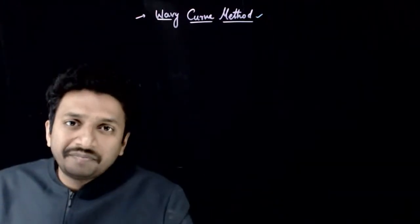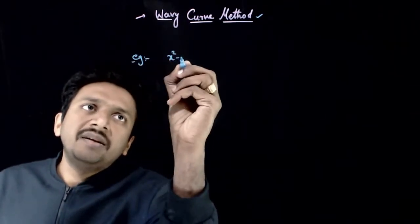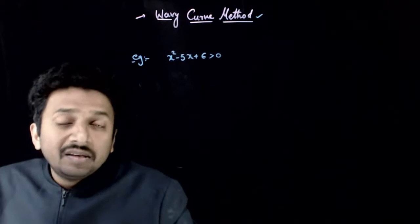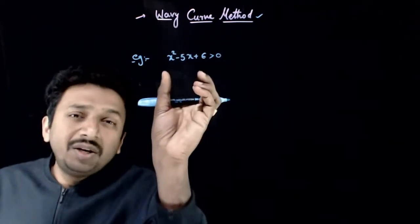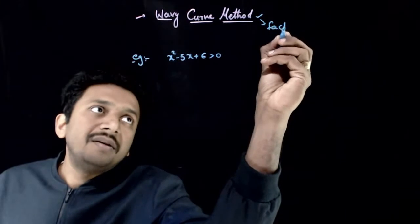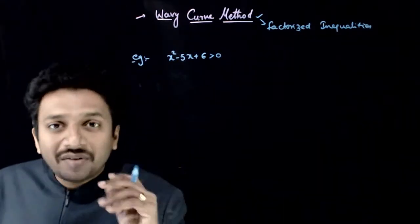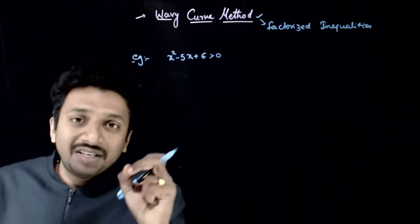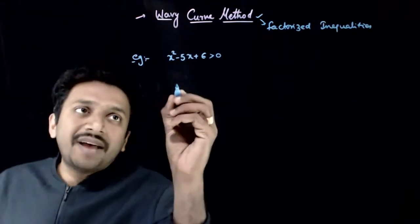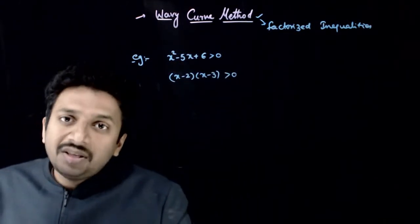So what is this Wavy Curve method? Let us try to understand this process using the same example: x squared minus 5x plus 6 greater than 0. Before using the Wavy Curve method, we need to factorize this inequality. The Wavy Curve method is a method to solve factorized inequalities. To use it, first you need to factorize the given expression. So: (x minus 2)(x minus 3) greater than 0.